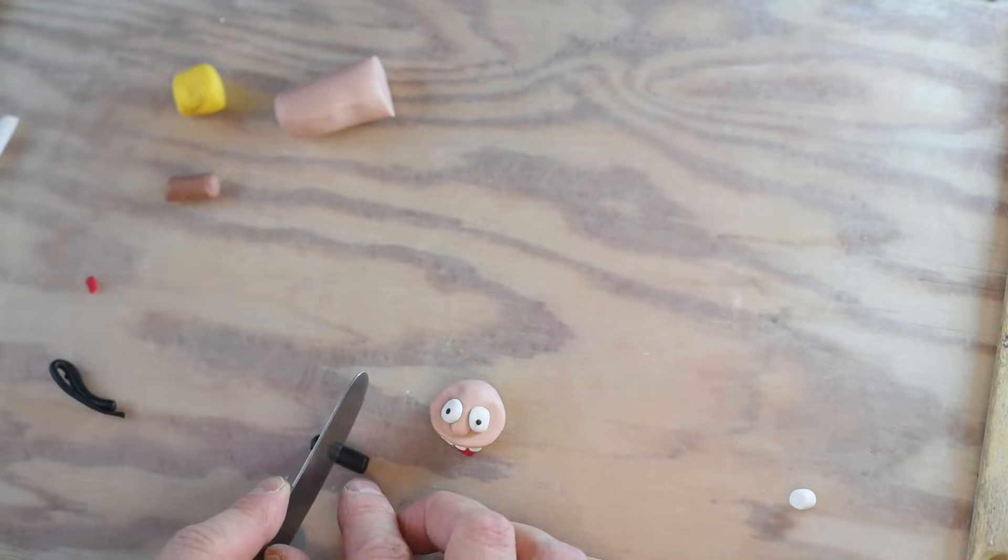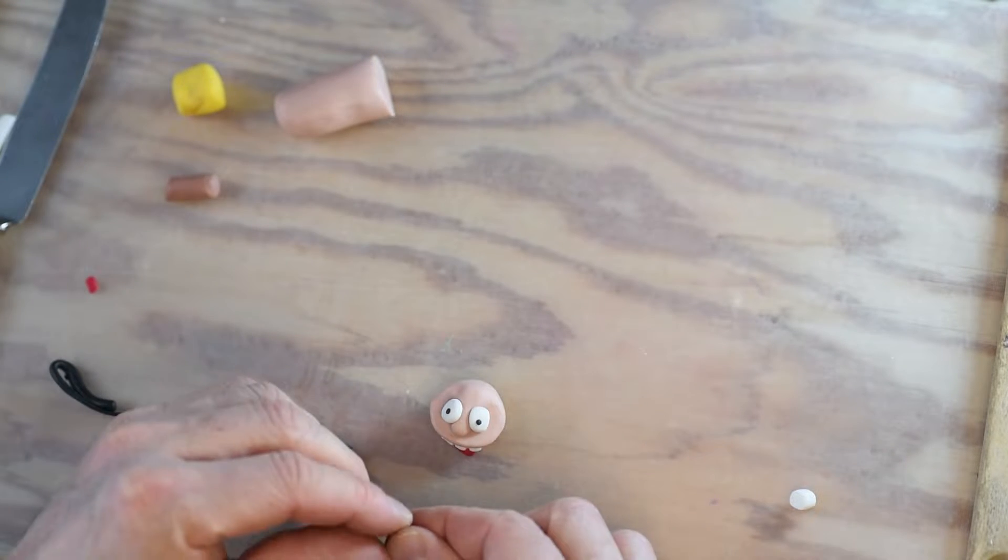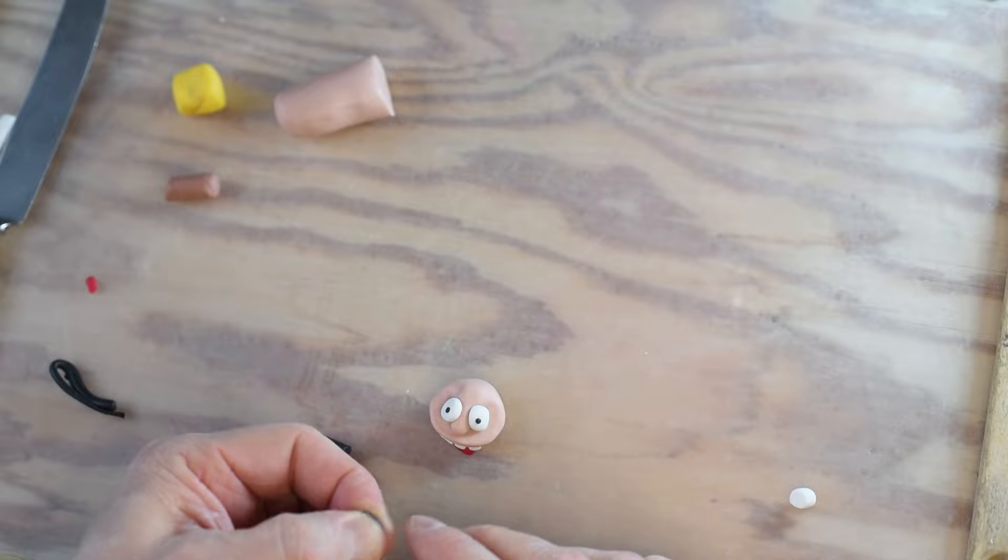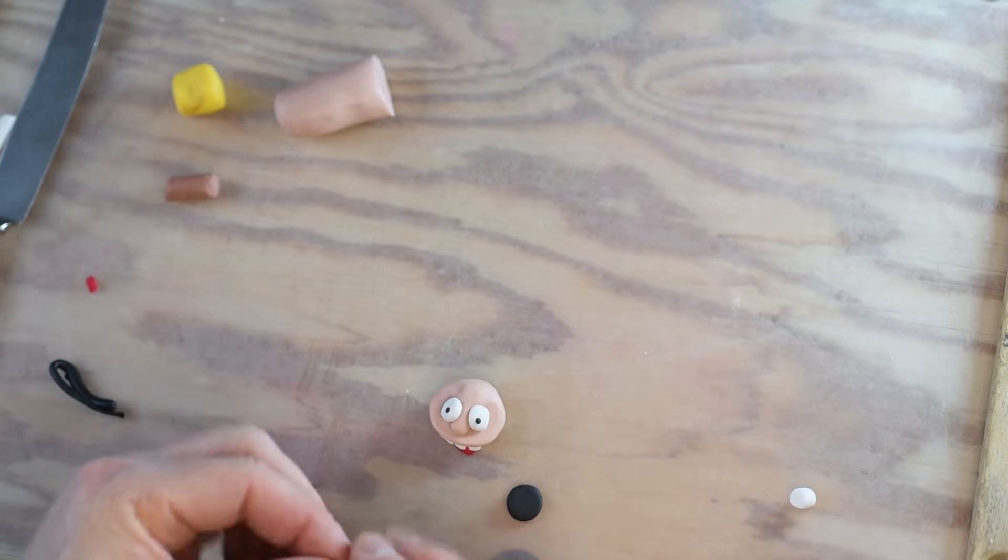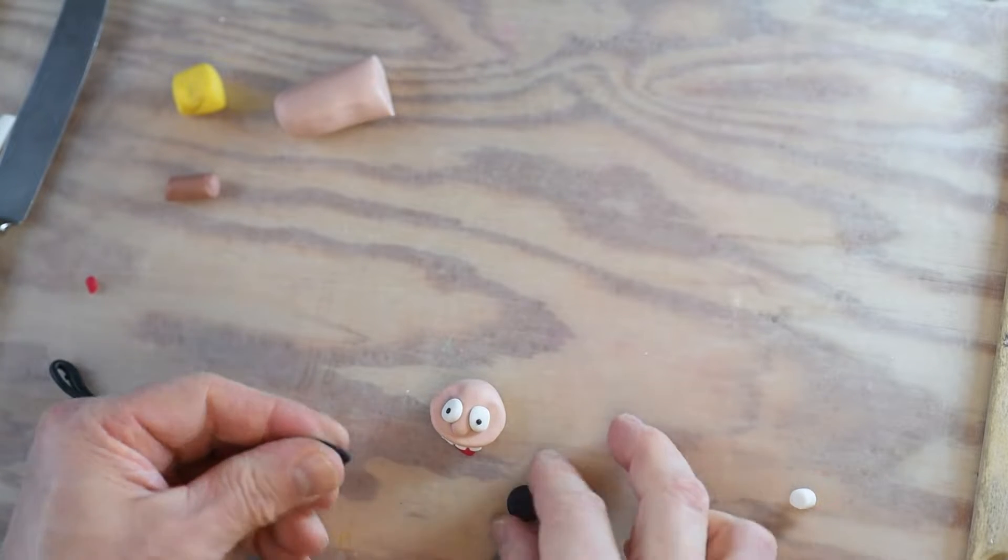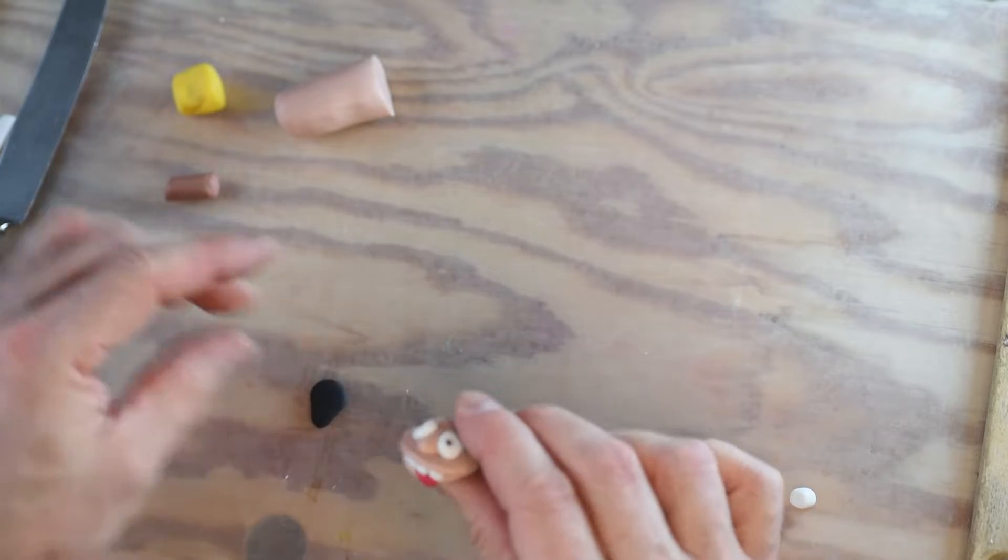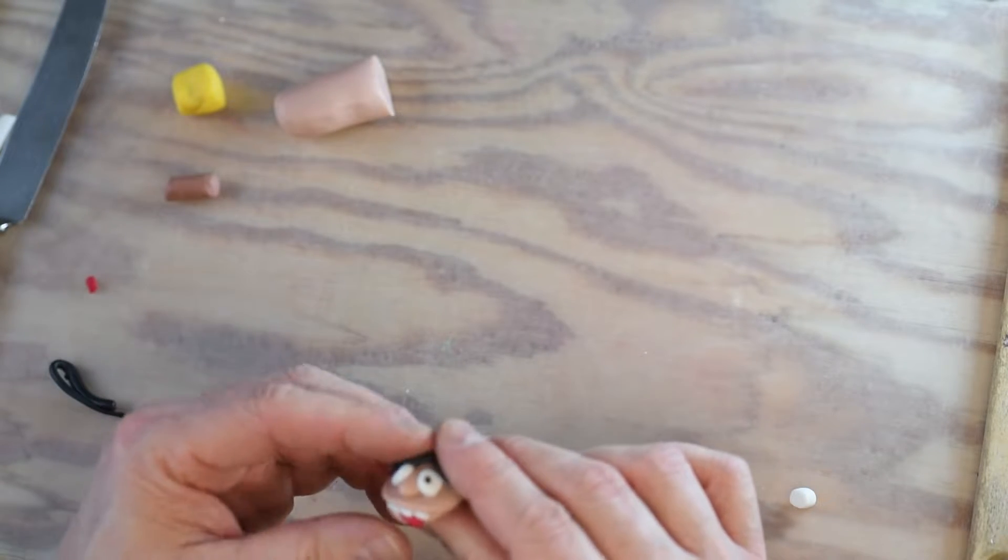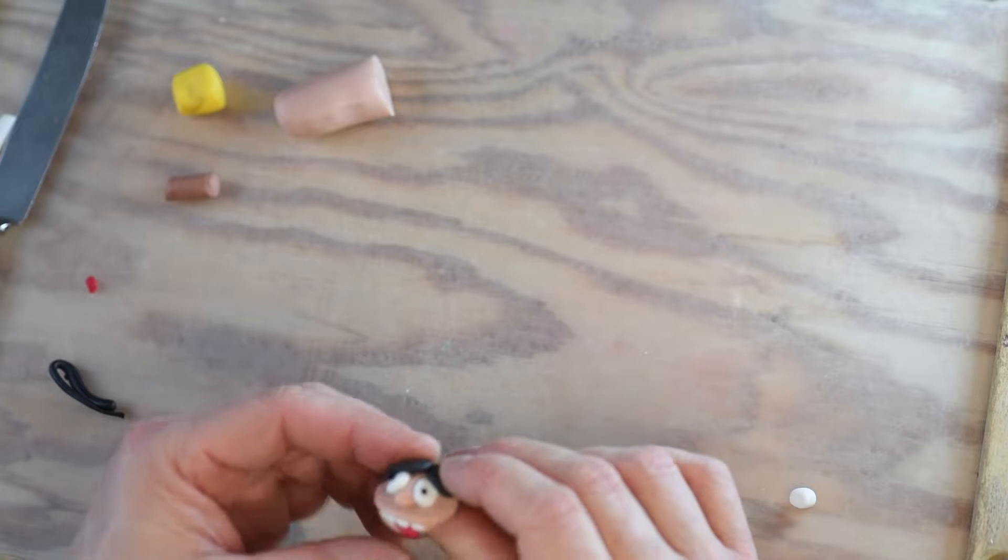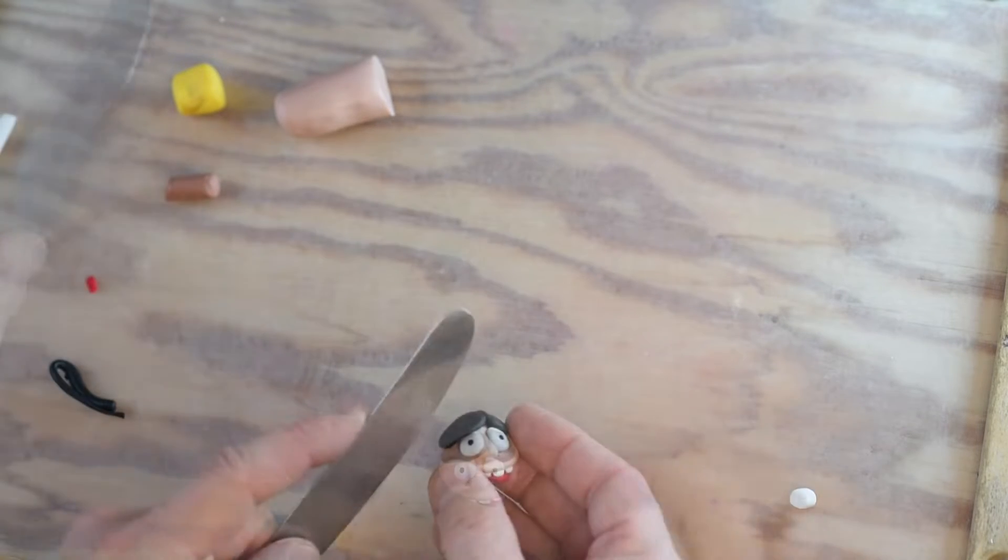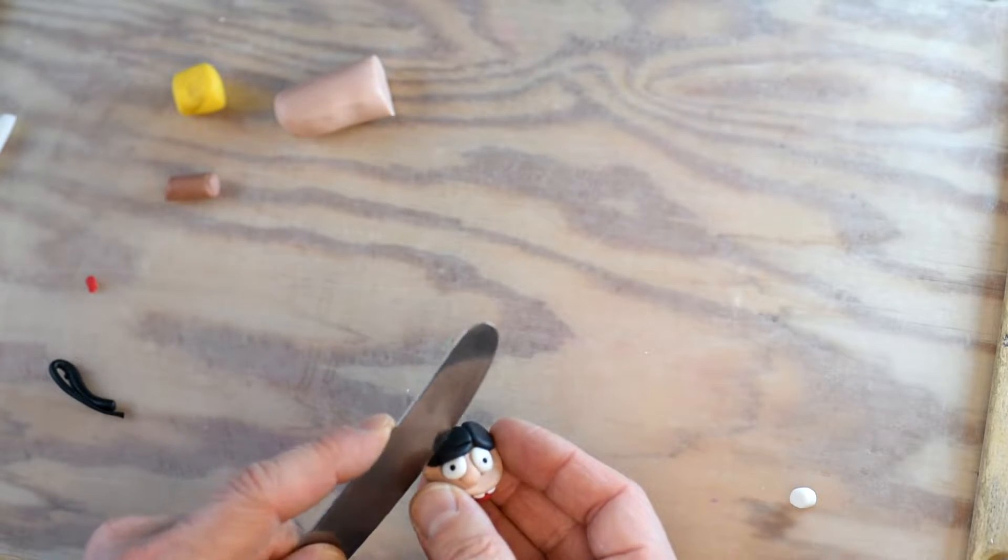Now if you want to make some hair, cut two pieces of black and put them on the head. To get the right texture, use your knife.